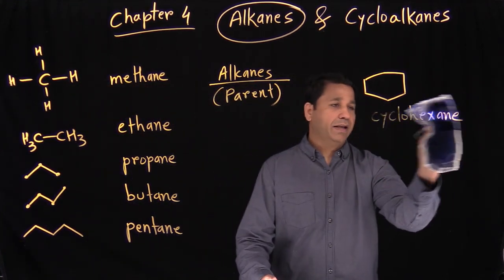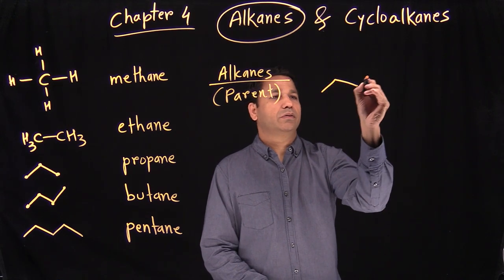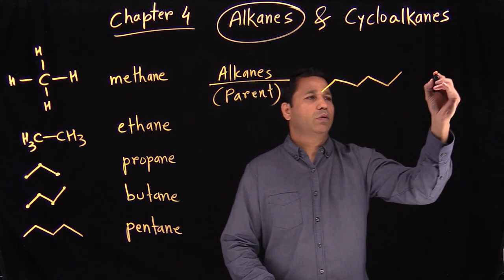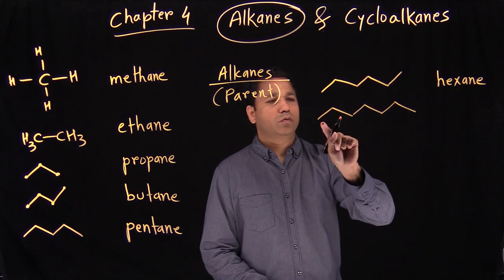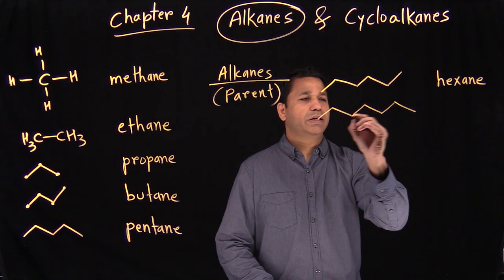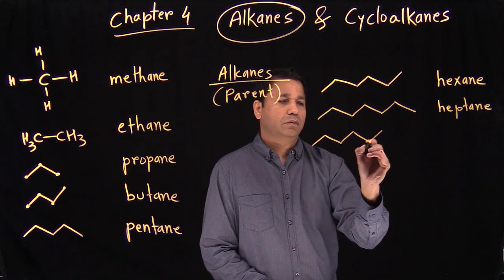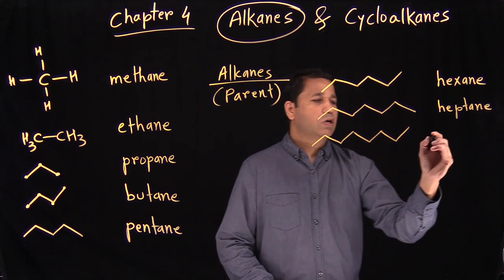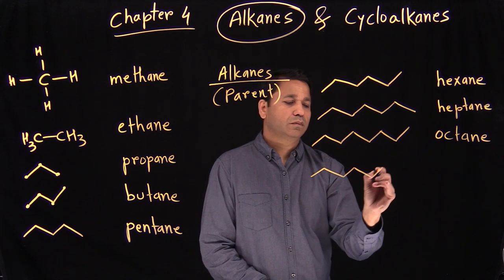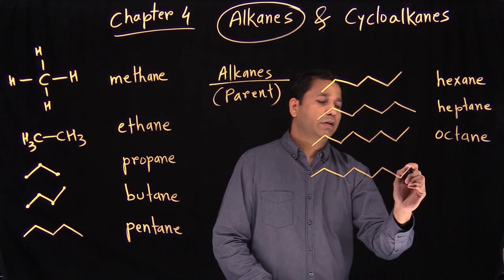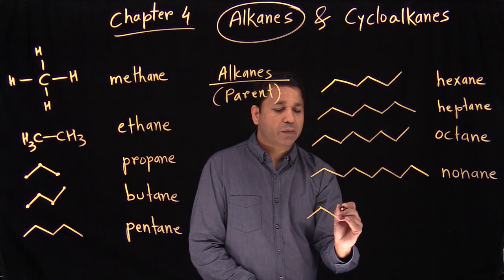We have to go all the way up to ten. Six carbons is hexane. Seven carbons is heptane. Eight carbons is octane. Nine carbons is nonane. And ten carbons is decane.